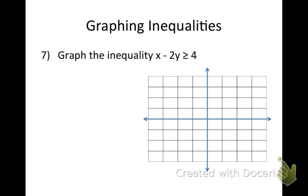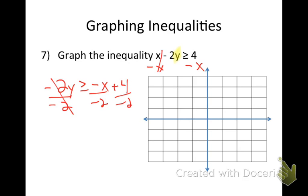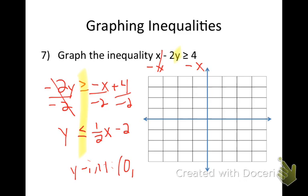x minus 2y is greater than or equal to 4 — put it in slope-intercept form by solving for y. Subtract x on both sides: negative 2y is greater than or equal to negative x plus 4. Now I divide by negative 2 — dividing by a negative means I flip the inequality sign — giving y is less than or equal to positive 1 half x minus 2. Y-intercept is (0, negative 2), slope is positive 1 half, go up 1 over 2. Solid line, and now I shade below.